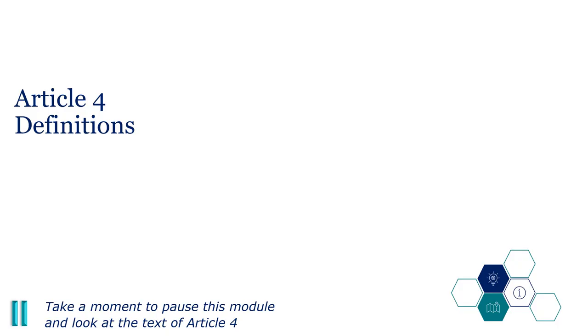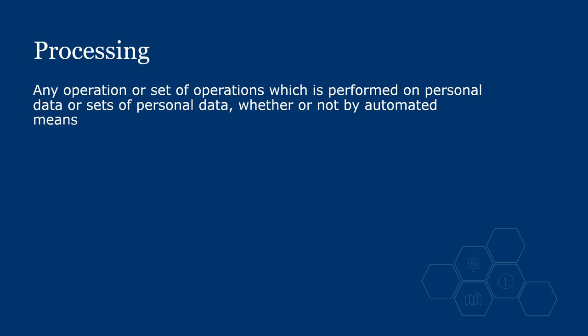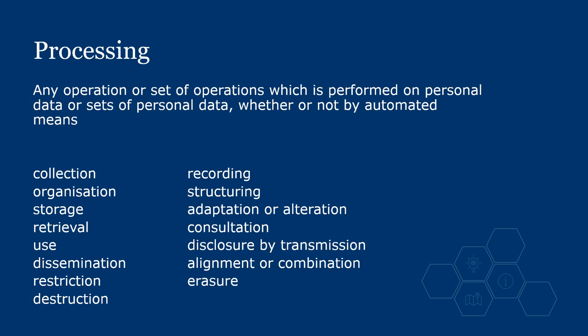Now may be a good moment to pause this module and look at the definitions provided in the UK GDPR — have a look at the text of Article 4. Processing is also defined by the legislation and covers all these operations. Note that data sharing counts as disclosure, and that storage — simply holding the data — counts as processing. A controller therefore doesn't have to be actively doing anything with the data for it to be caught under the definition of processing.